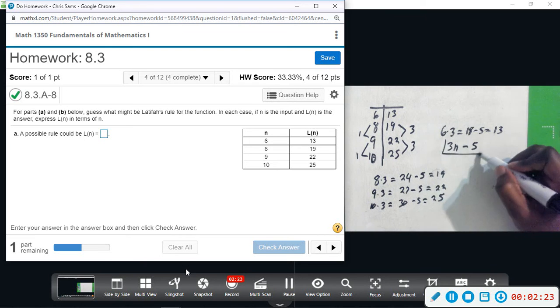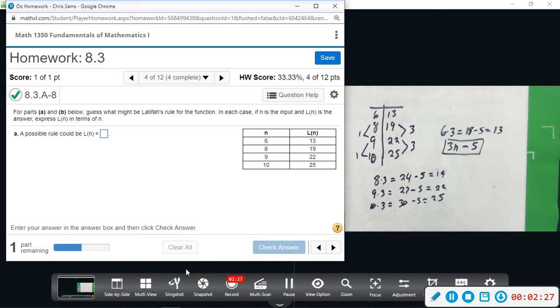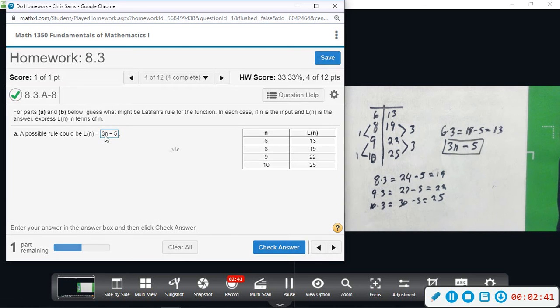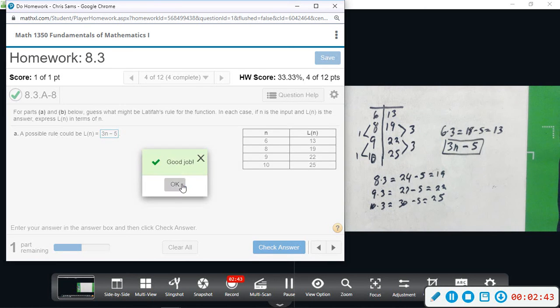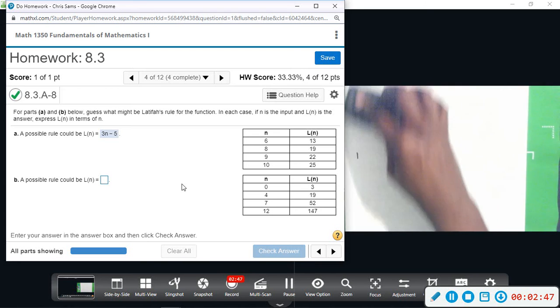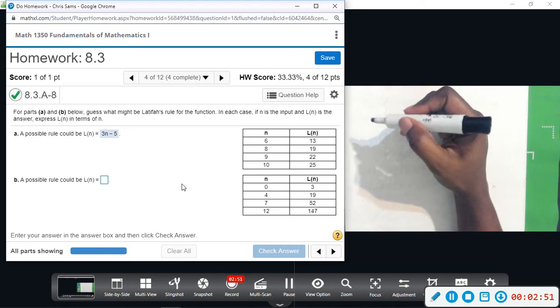Okay, so I just kind of find that common difference when counting by ones and then add or subtract whatever you might need to, try to get that number and check to see if it works. It does take some trial and error to see what's going on. 3n minus 5. Okay, so part B, none of these are counting by one.